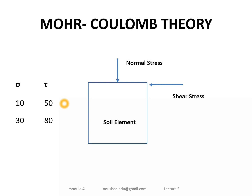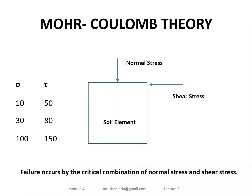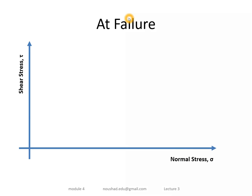Failure occurs by the critical combination of normal stress and shear stress. When we plot the normal stress and shear stress at failure for different values of normal stress, we get multiple points. These points, when connected, form a straight line called the failure envelope.